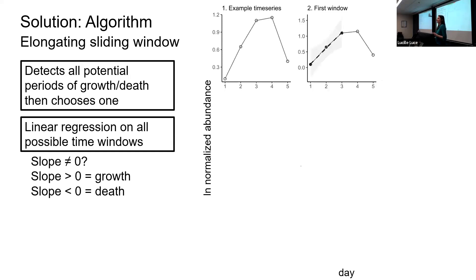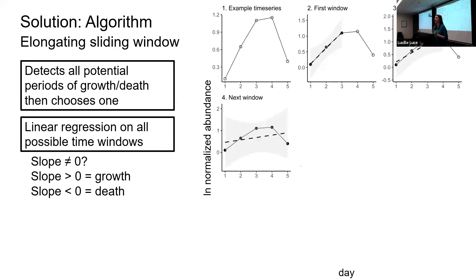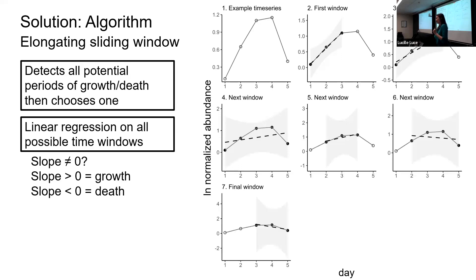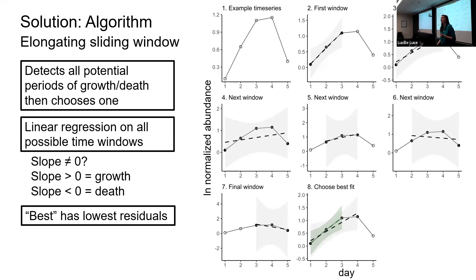The algorithm picks the minimal set of time points from the beginning and fits a linear regression, elongates it, checks again, elongates, checks again, moves over, checks again, elongates, and so on. In this way it checks every single possibility and records what seems to possibly be growth or death. At the end, we end up with two possibilities for growth, and I pick the best one based on the lowest residuals or errors surrounding that regression.